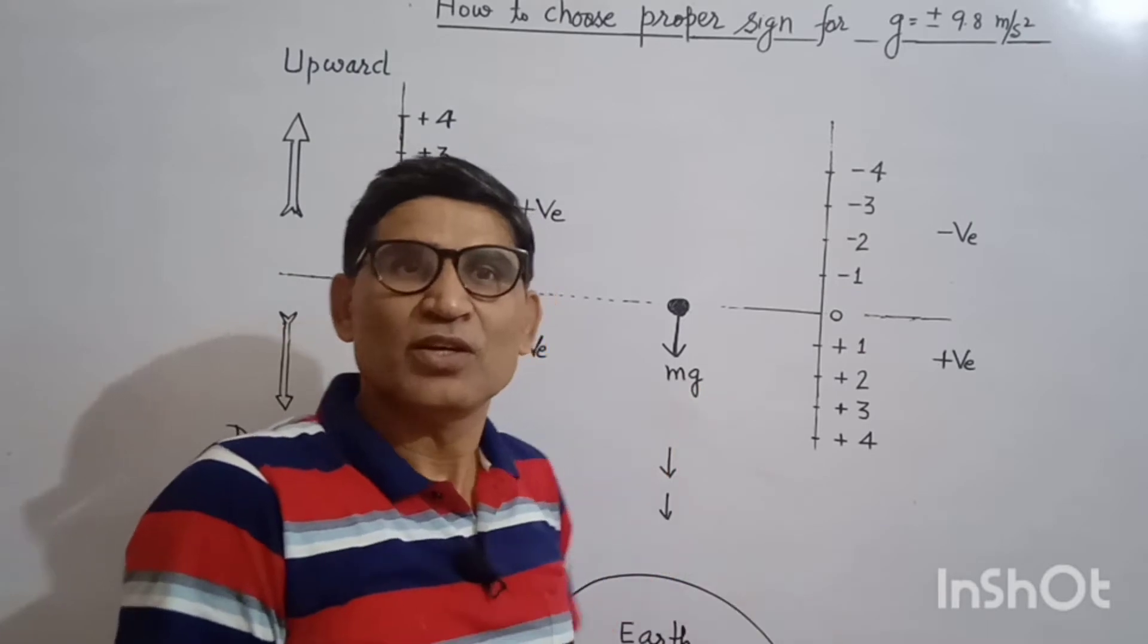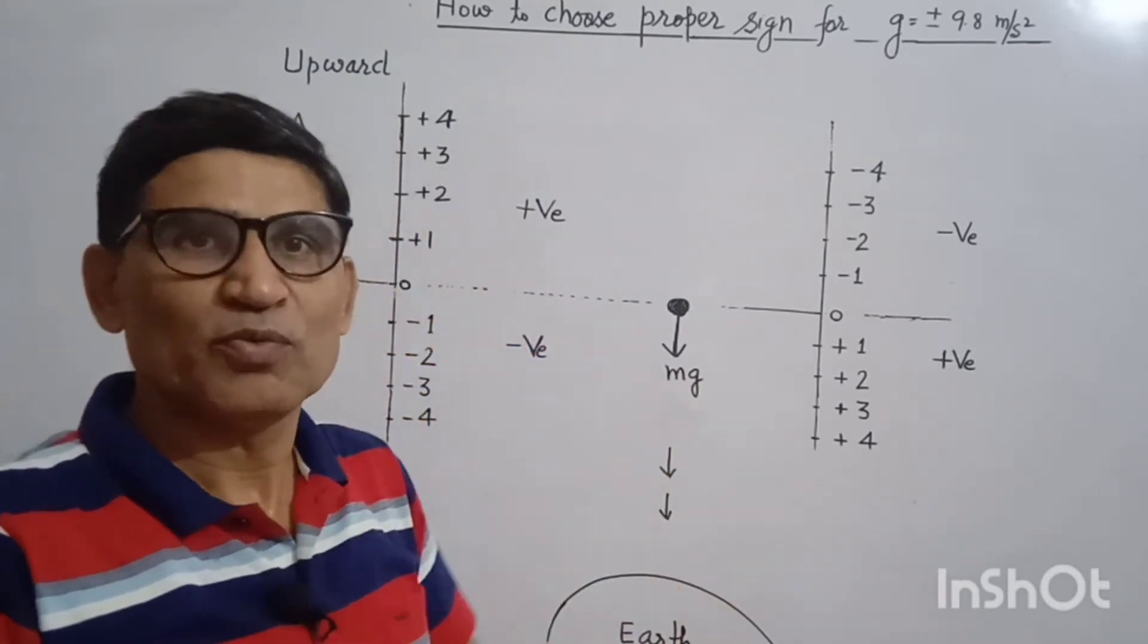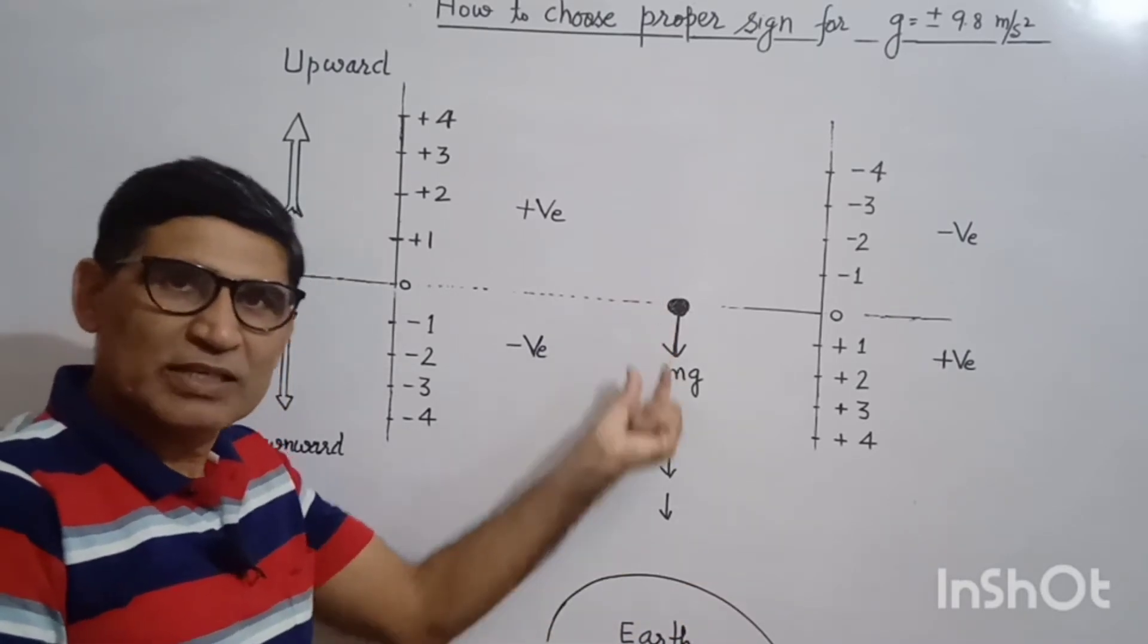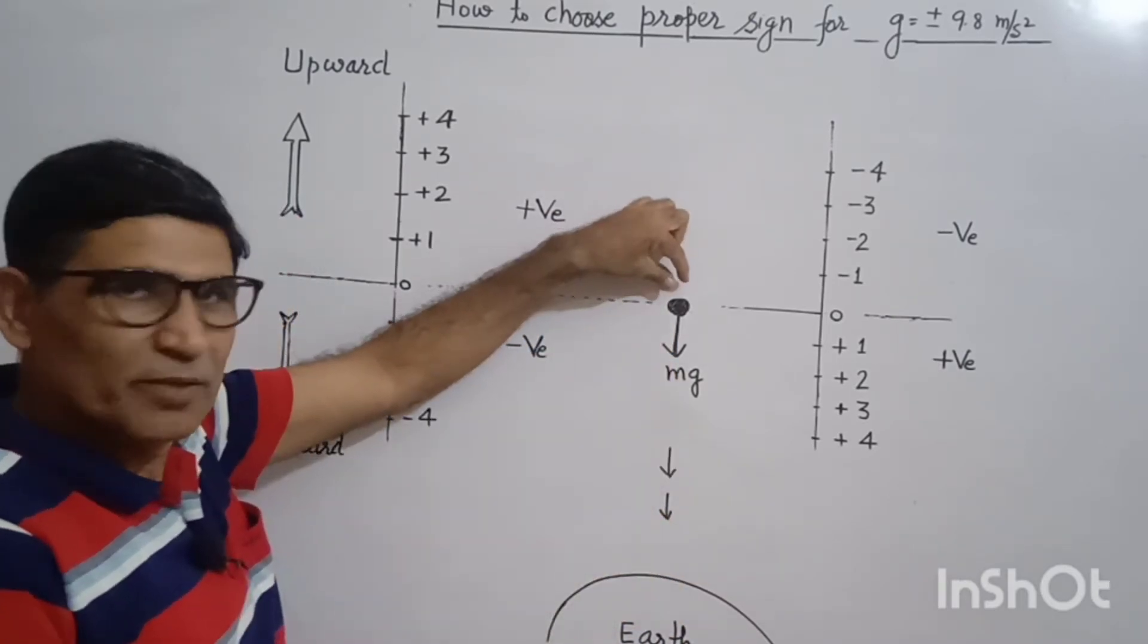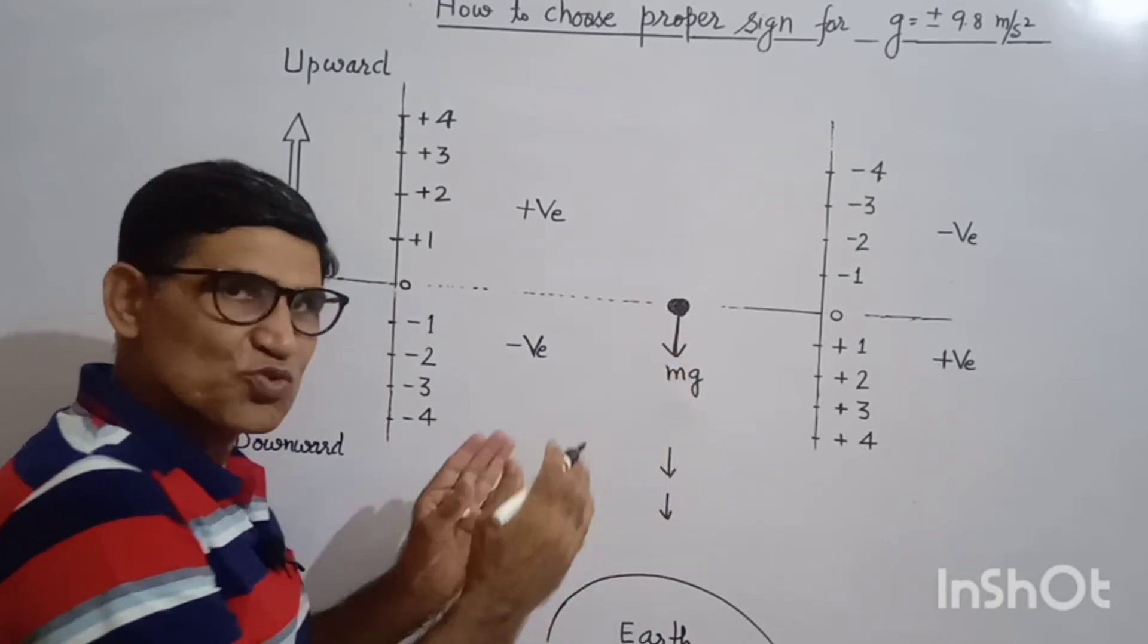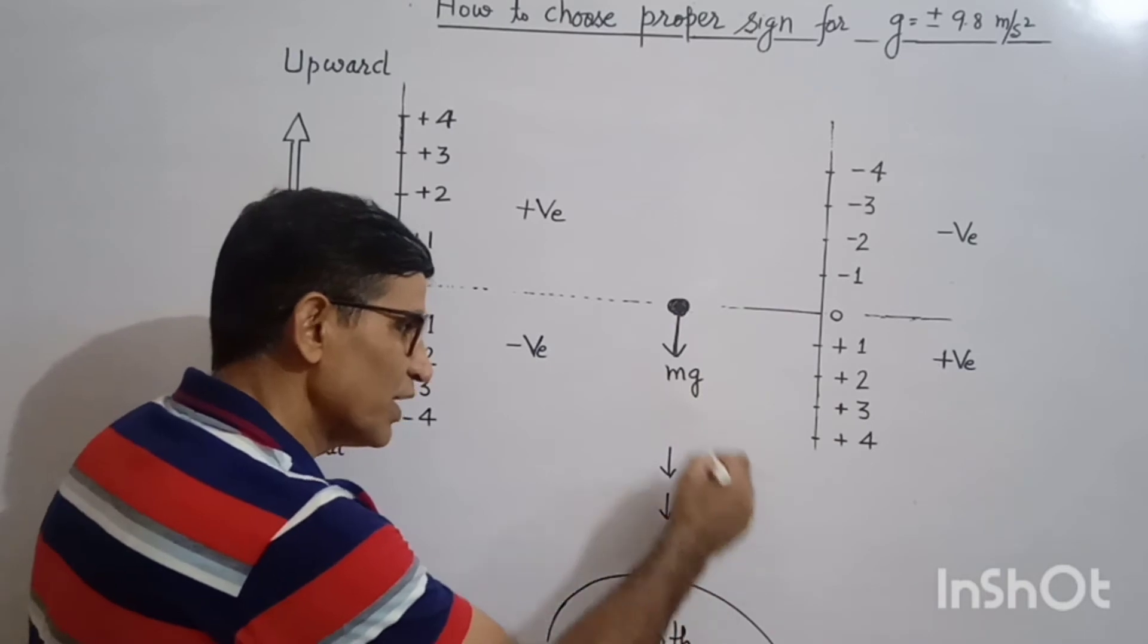So what is the easy way to take the value of g proper way? Here you know the earth is attracting everybody towards its surface. So this is a body whose mass is m. So weight mg is acting on it. So actual direction of g is downward. This is the actual direction.